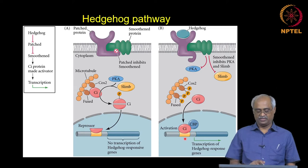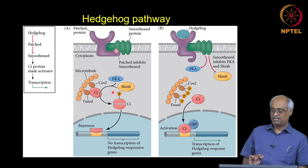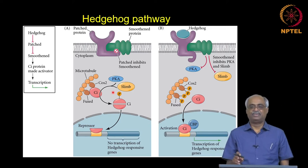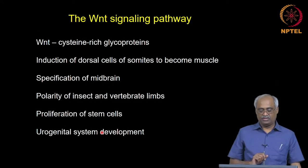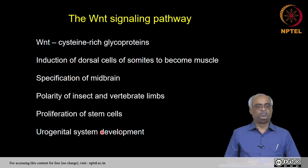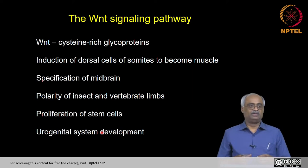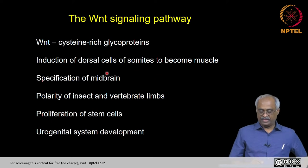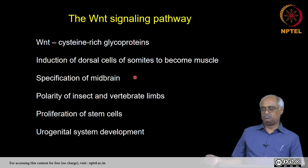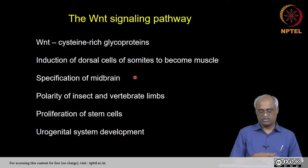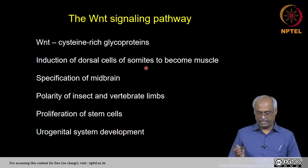The uniqueness of the hedgehog pathway is these specific molecules and the cholesterol modification, which prevents confusion with other pathways. The next one is Wnt signaling. The word Wnt comes from Wingless, a Drosophila mutant phenotype, and Int, a vertebrate ortholog first found in Xenopus. These are glycoproteins rich in cysteine. They are important for dorsal somites to become muscle, required for midbrain specification, and involved in limb development like JAK-STAT.